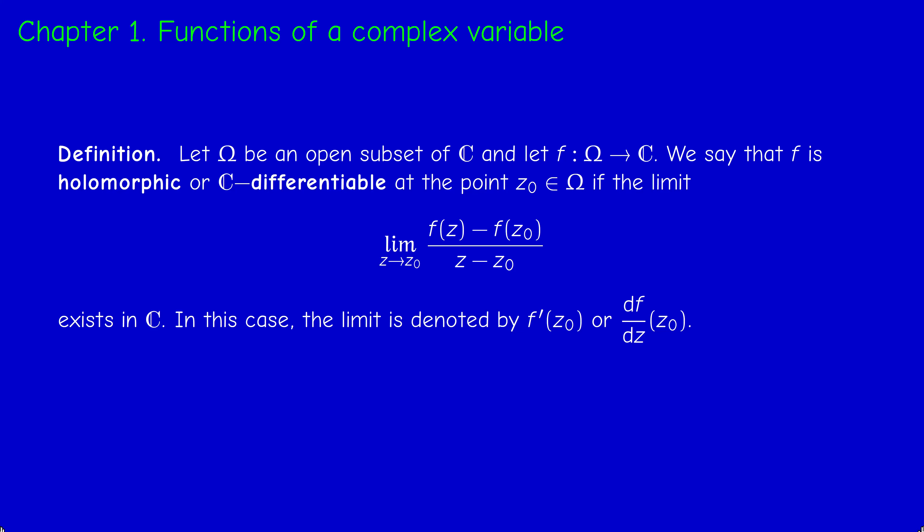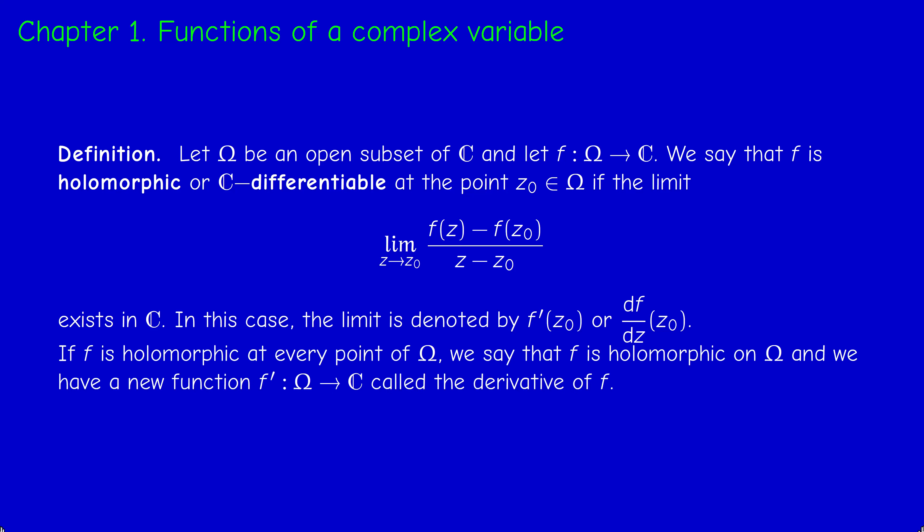If F is holomorphic at Z₀, the limit is denoted F'(Z₀) or dF/dz at Z₀, and is called the derivative at the point Z₀ — it is a complex number. If F is holomorphic at every point of Ω, we say F is holomorphic on Ω, and we have a new function called the derivative of F, denoted F'. Don't confuse the derivative at a point, which is a complex number, with the derivative on a set, which is a function.